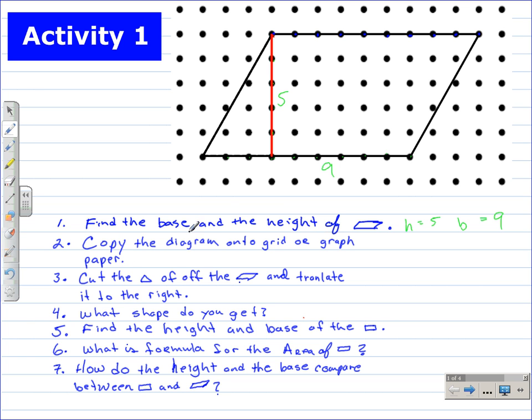Now once you have this done, you're going to want to cut off this triangle. Cut off that triangle so it's a separate piece so you can move it. What you're going to want to do is translate it to the right. And what you should end up with is a rectangle.